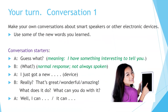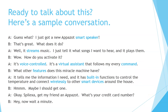Your turn. Let's have a conversation. Ready to talk about this? Here's a sample conversation. 'Guess what? I just got a new Aphazot smart speaker.' 'That's great. What does it do?' 'Well, it streams music. I just tell it what songs I want to hear and it plays them.' 'Wow! How do you activate it?' 'It's voice controlled. It's a virtual assistant that follows my every command.' 'What other features does this miracle machine have?' 'It tells me the information I need and it has built-in functions to control the temperature and connect wirelessly to other smart devices around the house.' 'Hmm, maybe I should get one.' 'Okay. Spelexa! Get my friend Aphazot!' 'What's your credit card number?' 'Hey, now wait a minute.'